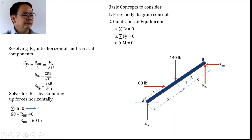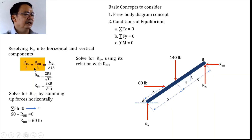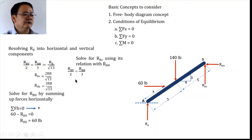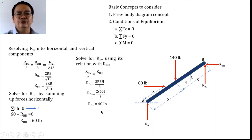After computing R_BH, we can immediately solve for R_BV using the ratio relationship. Substituting R_BH equal to 60 into the proportional relationship and simplifying — the 60 and 30 cancel — giving us R_BV equal to 40 pounds.